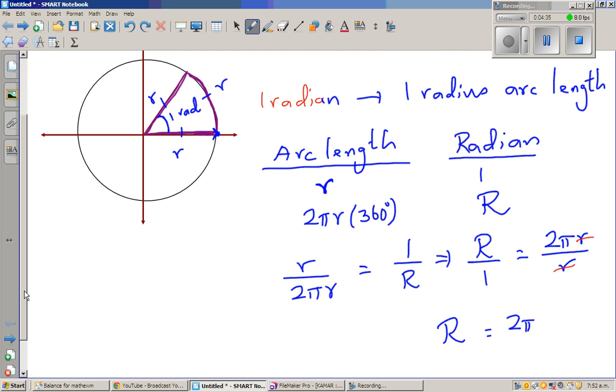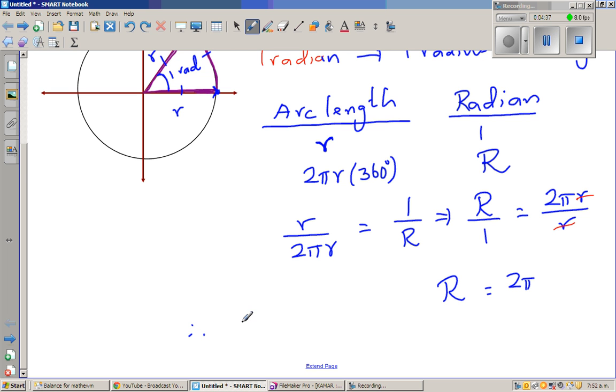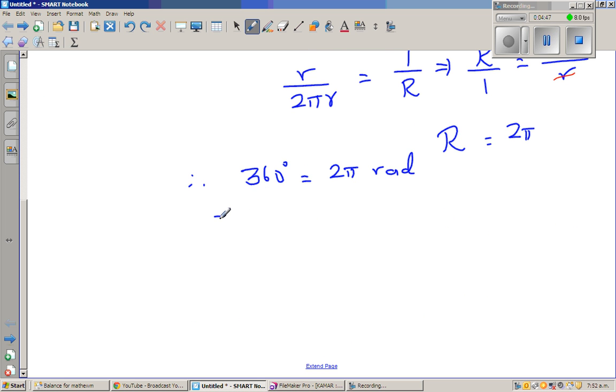And this means, therefore I can say 360 degrees is equal to 2π radians. So from this implies, 180 degree is π radians. 90 degree is π by 2. We don't write radians.